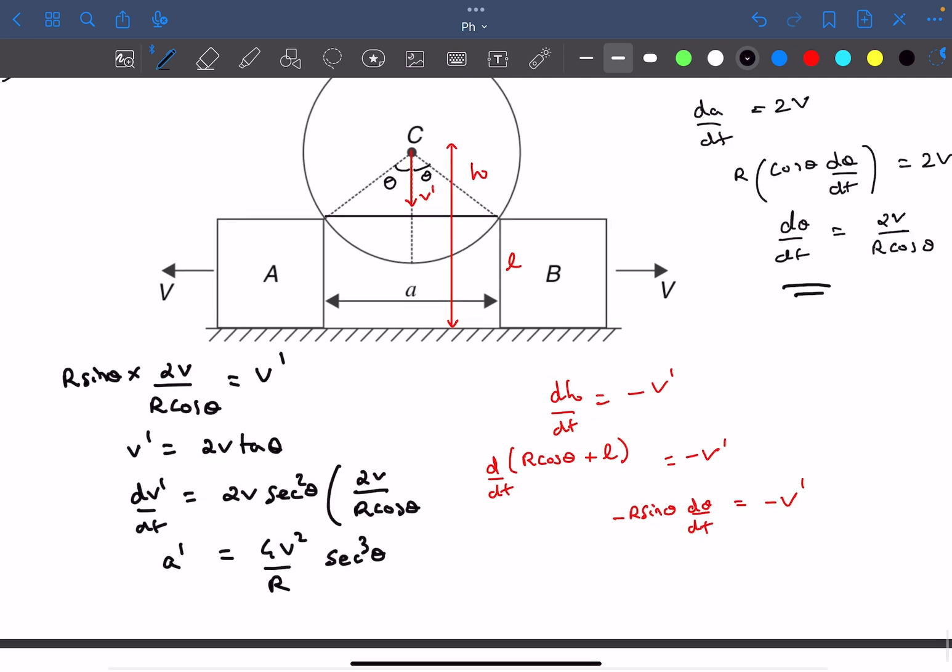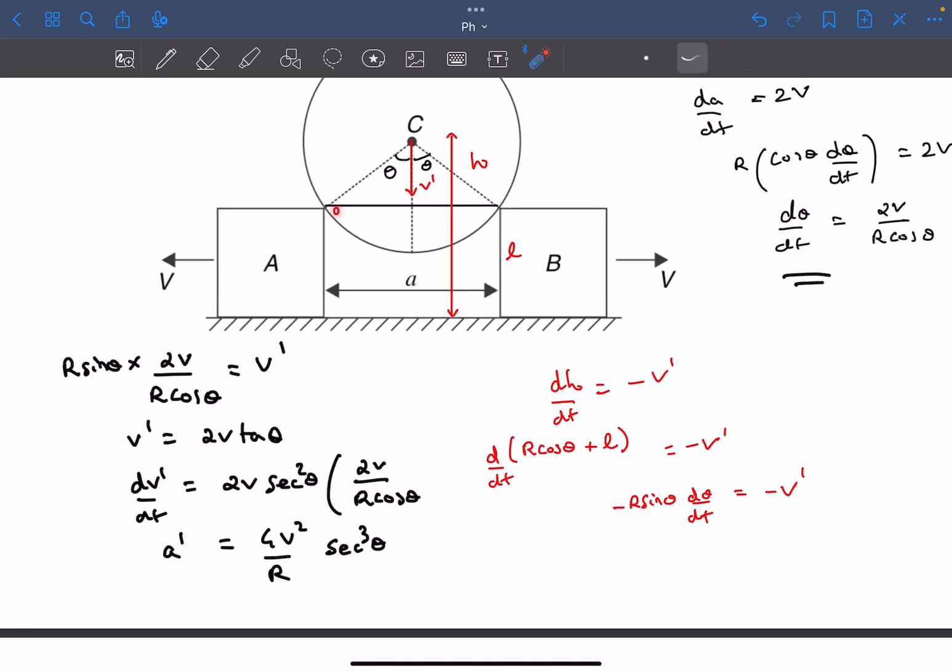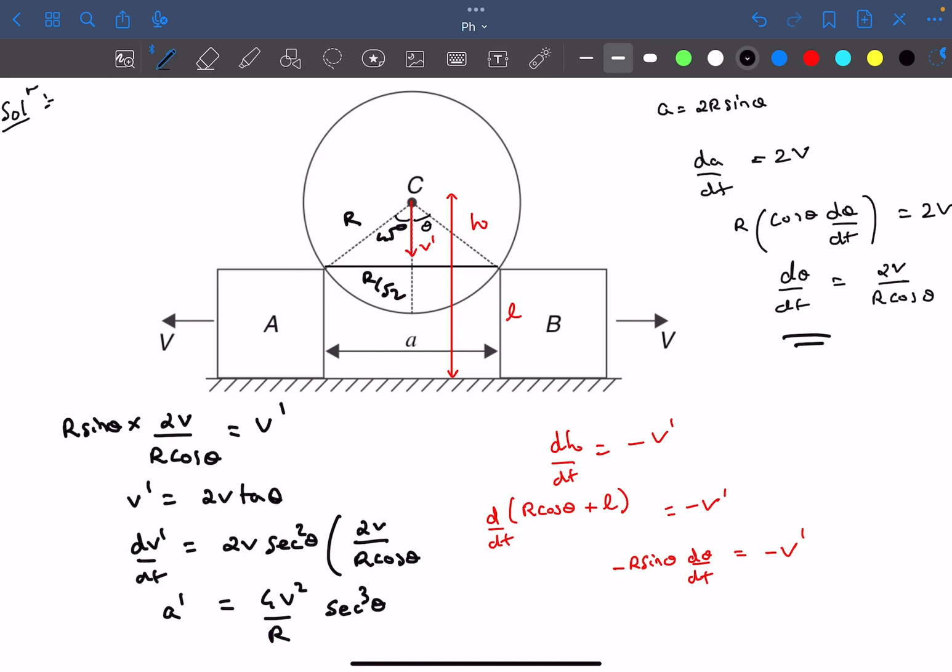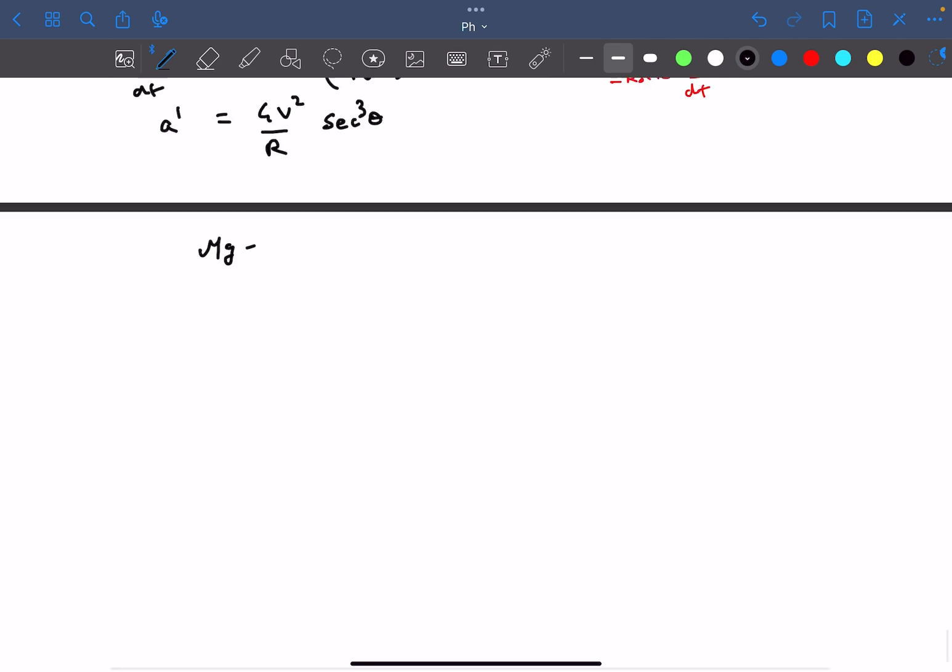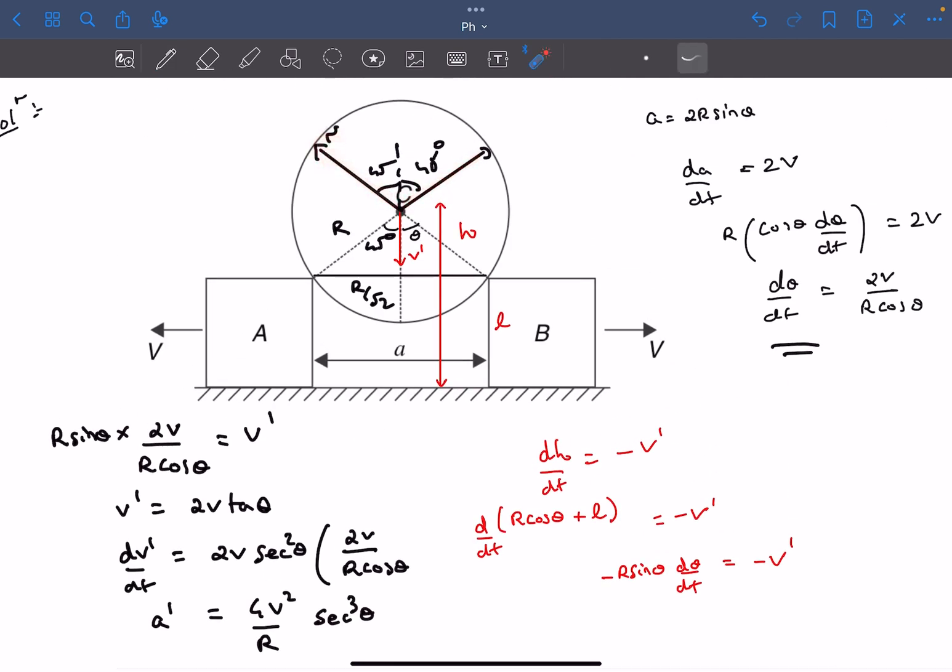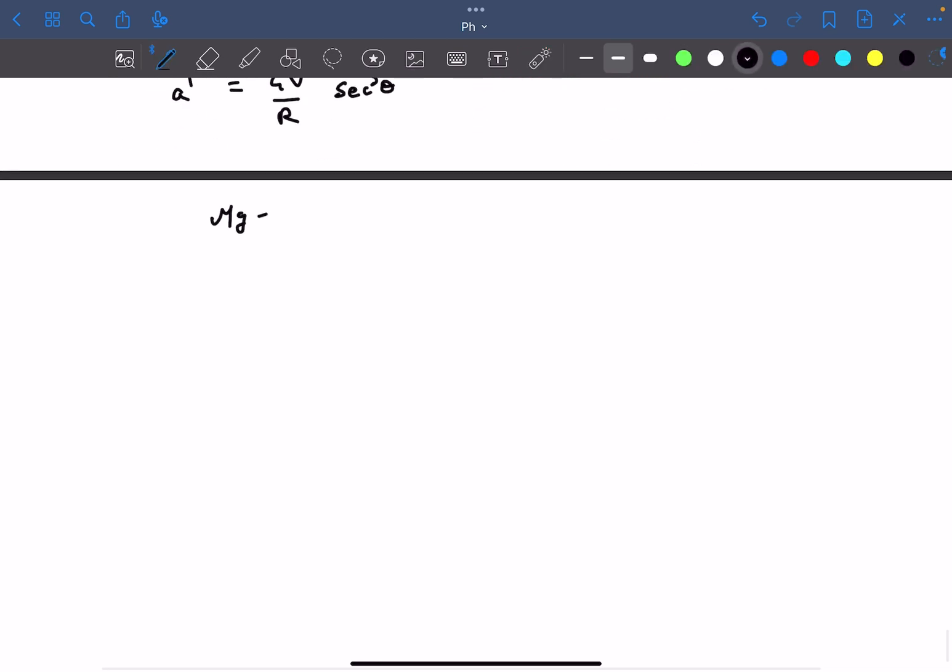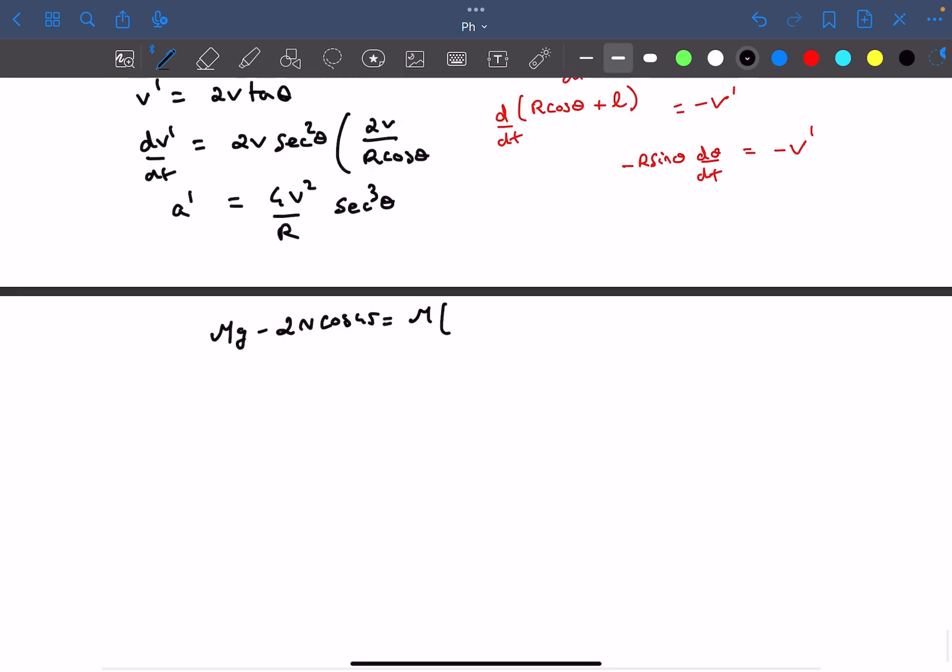They wanted us to find the normal reaction when the separation was root 2R. If A equals root 2R, from the right triangle we can say theta equals 45 degrees. Clearly the normal reaction on the sphere by the blocks will be in this direction passing through the center. These angles are 45 degrees now. We can write the net downward force which is Mg minus 2N cos 45 equals M times acceleration. The acceleration at theta 45 degrees is 8 root 2 V squared by R.